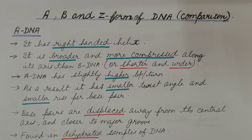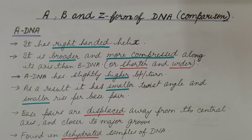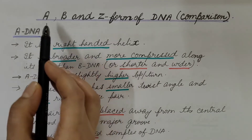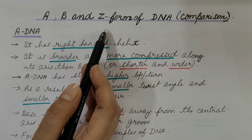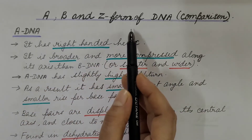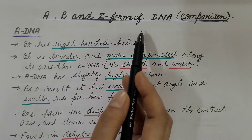Hello friends. In the previous video we discussed about the structure of double-stranded DNA. We discussed about the most common form of DNA, that is B-DNA, its features, and the reasons why double-stranded DNA is twisted. You can refer to that video; the link is given in the description box. Today we are going to discuss about two other forms of DNA, that is A and Z form, and then compare all three forms.